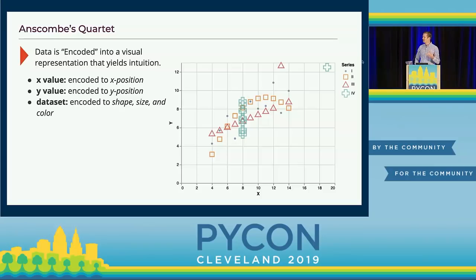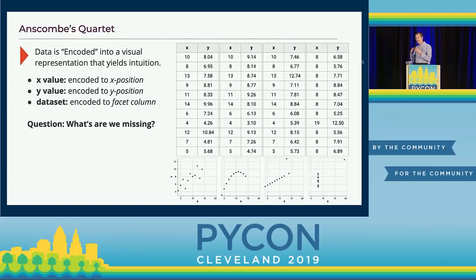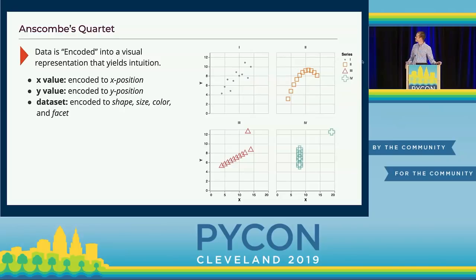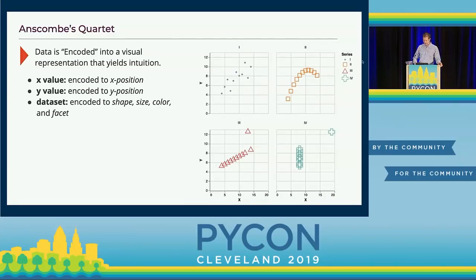We can start thinking about what drives that intuition in visualizations. Here's one where we encode by facet, shape, size, and color — it's a little bit crazy, but it helps us see what's going on. But there's one property in this data set that we're missing. What does this visualization completely ignore? Here's the row number — there's no information that tells you the order of the points as they appear in the table.